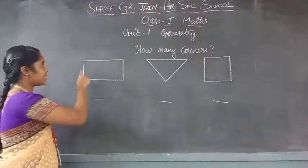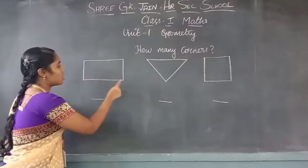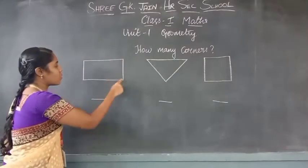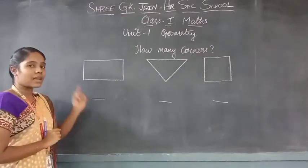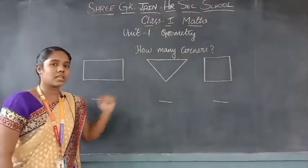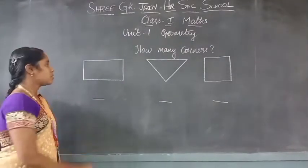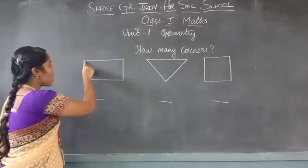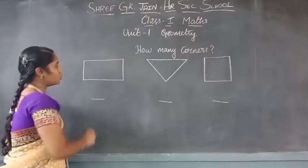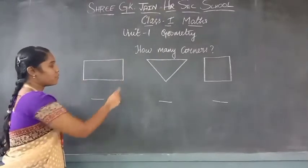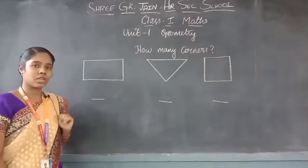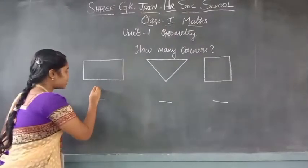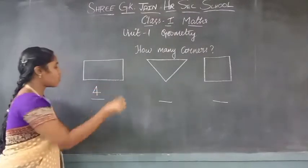So what are corners? These are the corners of the shape. Shall we count how many corners each shape has? For this first shape, how many corners are there? 1, 2, 3, 4. So totally for this shape, we have 4 corners. Shall we write it? 4.